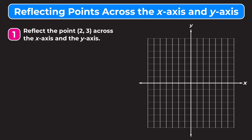We want to reflect the point (2, 3) across the x-axis and the y-axis. Let's first plot this point — we go to 2 on the x-axis, then up 1, 2, 3 on the y-axis. Let's plot this point in yellow so it's easier to see.